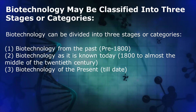Biotechnology may be classified into three stages or categories: 1. Biotechnology from the past, pre-1800s; 2. Biotechnology as it is known today, from 1800 to almost the middle of the 20th century; 3. Biotechnology of the present, till date.